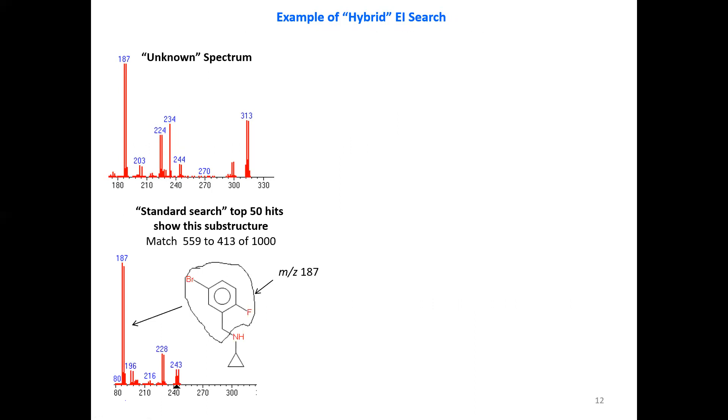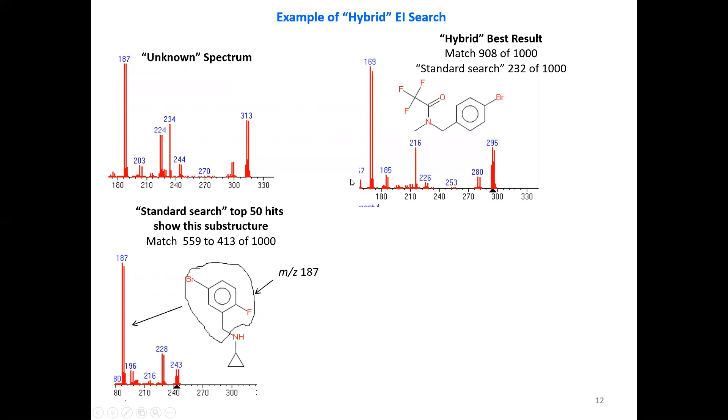So let's do an example to illustrate this. Here is an unknown spectra of a compound. We're going to do a standard library search and look at the results. In this case, I'm going to talk about the top 50 hits. The top 50 hits show this substructure with the bromine on a fluorine and an aromatic ring with a CH2 group. And the match factor of the top entry in the list is only 559 and it goes down to 413. That's out of a perfect fit would be 1000. Normally when I do searches, if I don't see anything above 850 or so, I don't get very interested. But there is information here. It still tells you something about the substructure of the compound.